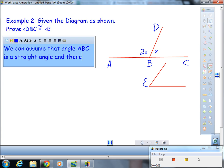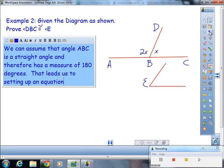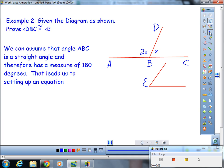And therefore has the measure of 180 degrees. That leads us to setting up an equation: 2x plus x equals 180. So I stop my paragraph for a second. 3x equals 180. I'm just showing my work step by step mathematically.